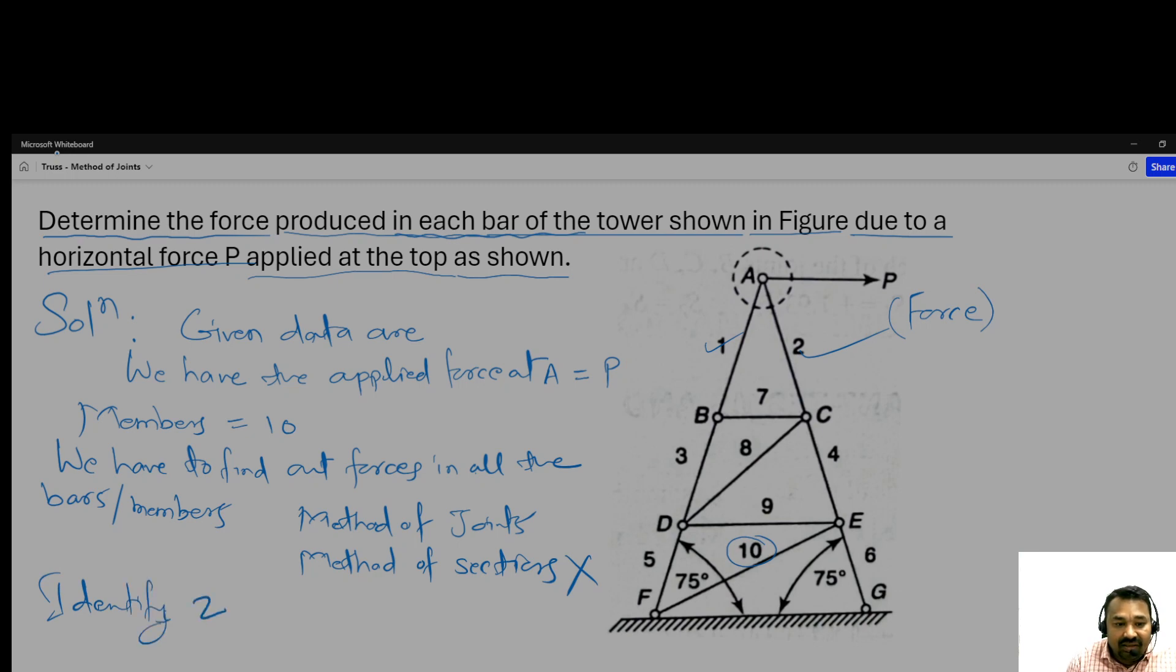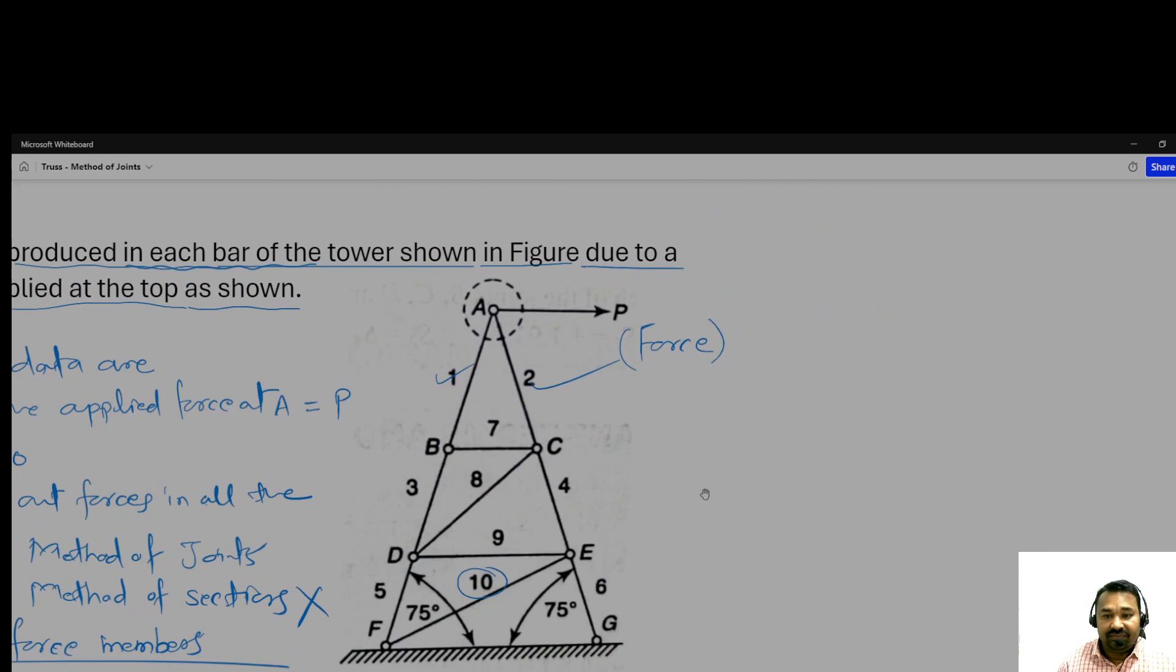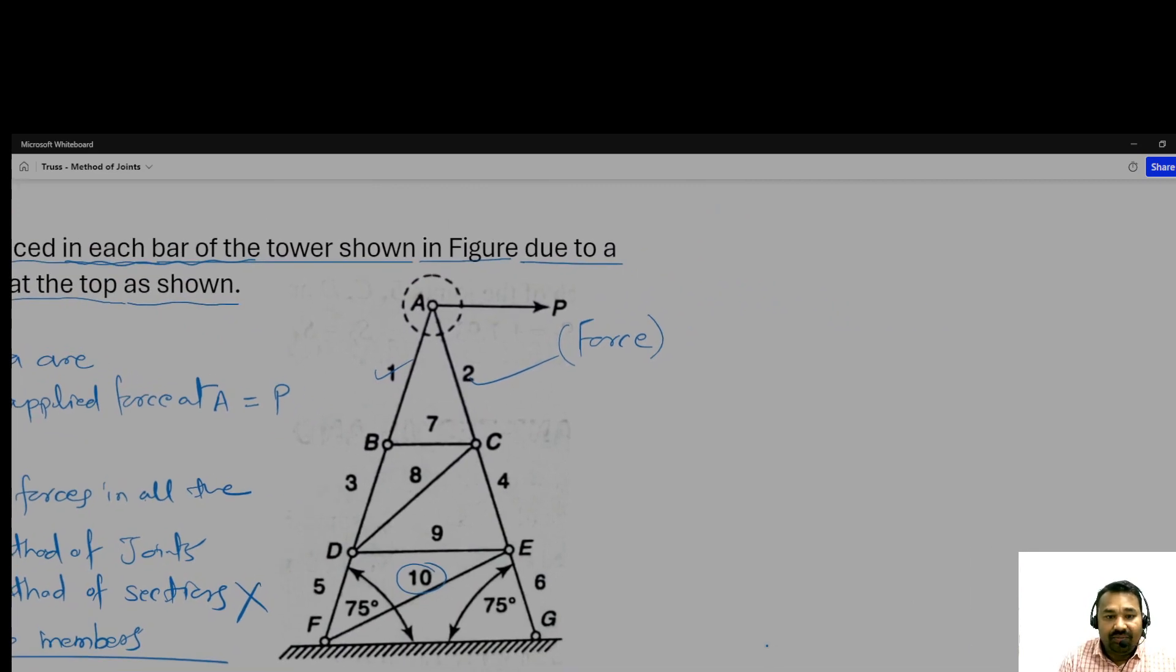What is the approach? Identify zero force members. We have to identify zero force members. What about F1? F1 may not be zero. F2 may not be zero, because at joint A there is a force P applied.